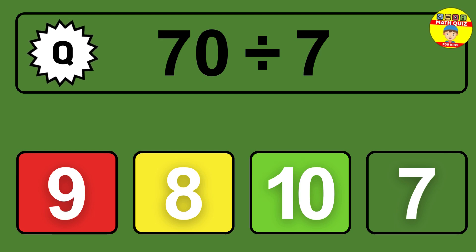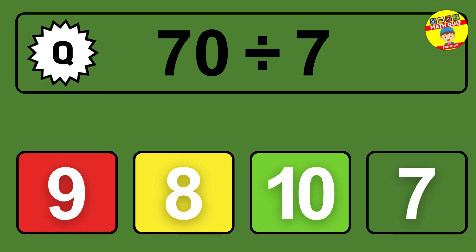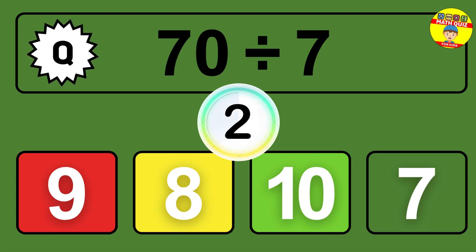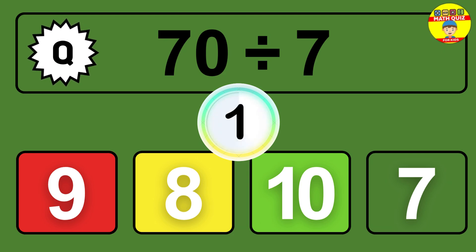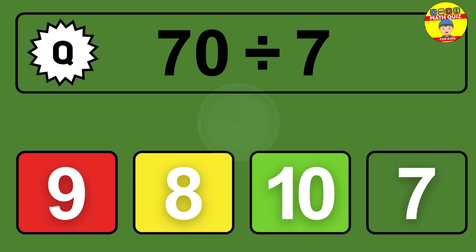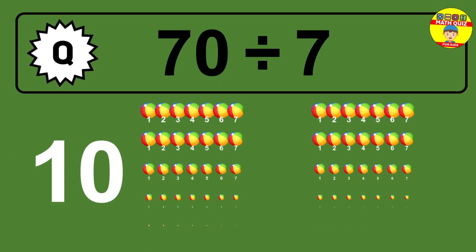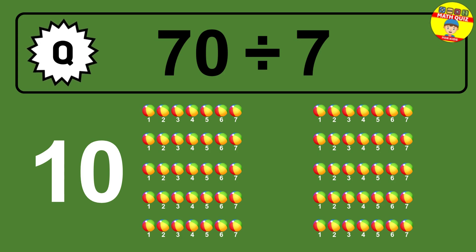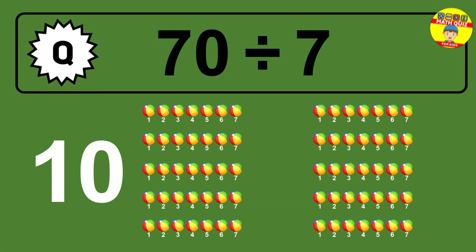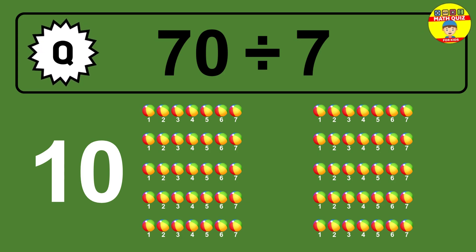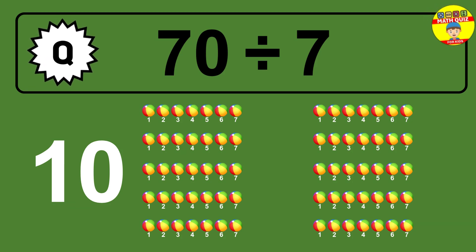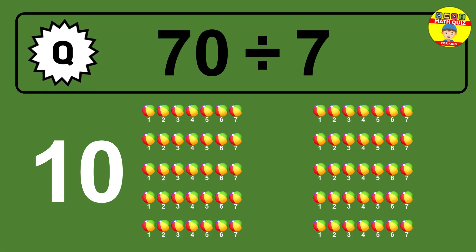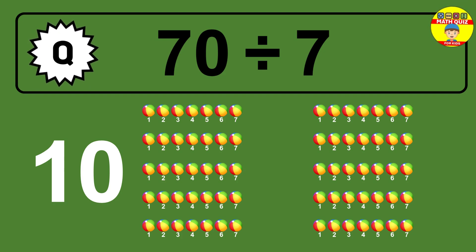What is 70 divided by 7? Picture this: you have 70 objects to divide into groups of 7. How many groups can you make? Let's think about it. Ready to find out? Let's break it down. Imagine you have 70 objects — can you picture them lined up? Now think about splitting them.